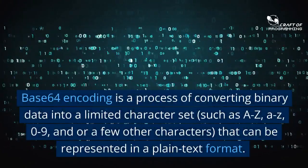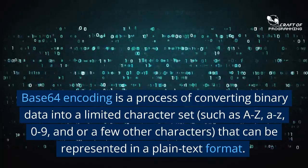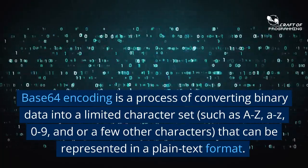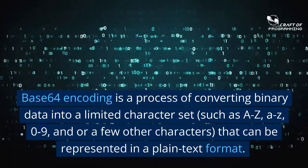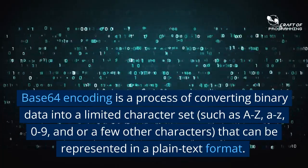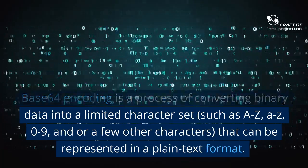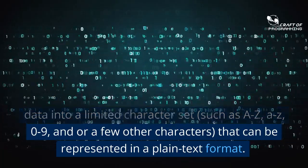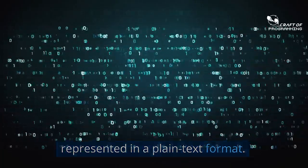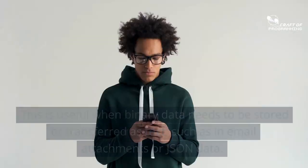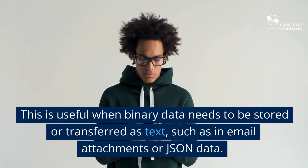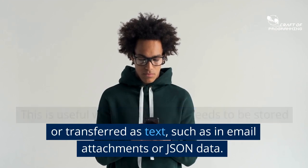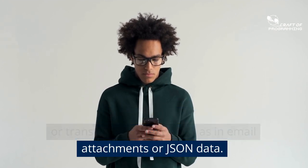Base64 encoding is a process of converting binary data into a limited character set, such as A to Z, 0 to 9, and a few other characters that can be represented in a plain text format. This is useful when binary data needs to be stored or transferred as text, such as in email attachments or JSON data.